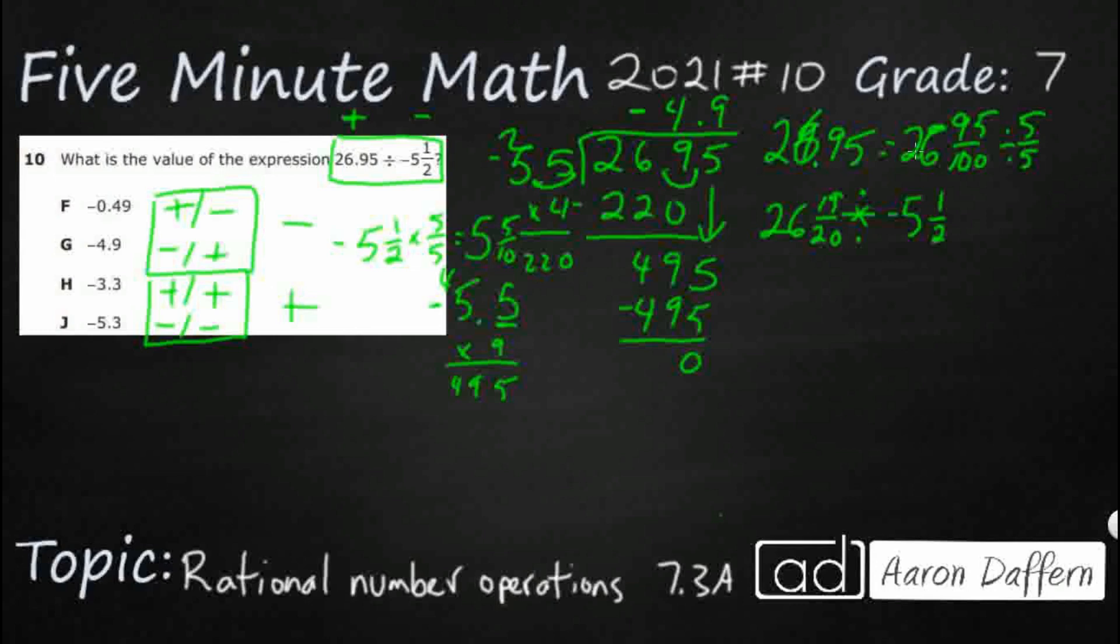Now I need to turn both of these into improper fractions. So I need to do 26 times 20, right? So that is going to be 520, then I need to add this. See how it gets a little bit crazy? So that's really 539 twentieths. So 26 and 19 twentieths is 539 twentieths. This is negative 11 halves.